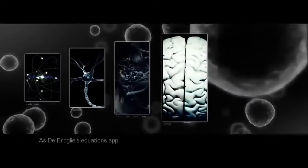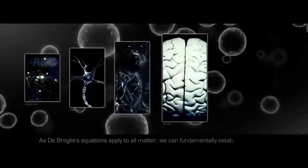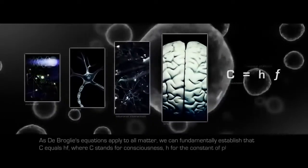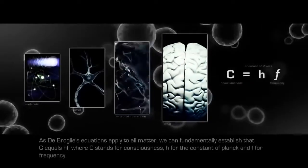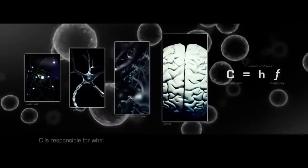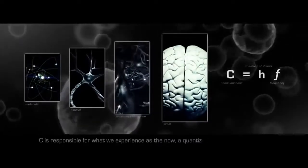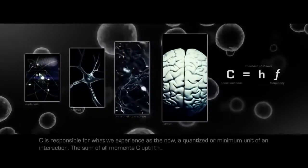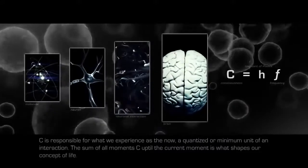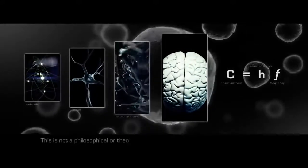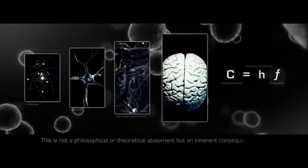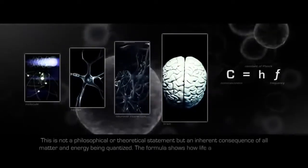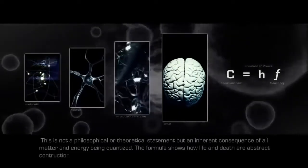As De Broglie's equations apply to all matter, we can fundamentally establish that C equals HF, where C stands for consciousness, H for the constant of Planck, and F for frequency. C is responsible for what we experience as the now, a quantized or minimum unit of an interaction. The sum of all moments C up till the current moment is what shapes our concept of life. This is not a philosophical or theoretical statement, but an inherent consequence of all matter and energy being quantized. The formula shows how life and death are abstract constructions of C.